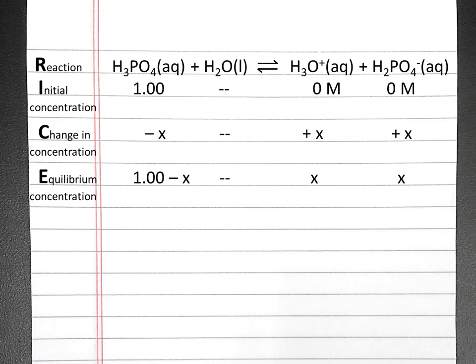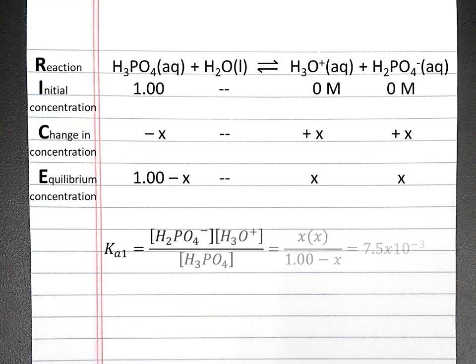We can write the equilibrium constant expression for this reaction. That will be the dihydrogen phosphate concentration times the hydronium ion concentration divided by the phosphoric acid concentration, and that's going to be x times x divided by 1 minus x, which equals 7.5 times 10 to the negative third.